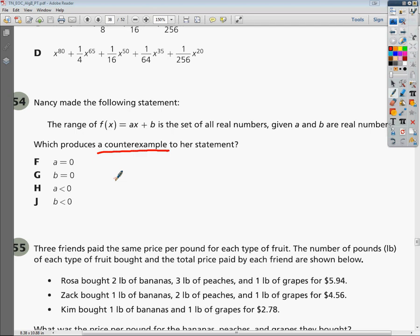When I see f(x) equals ax plus b, in my head I automatically think y equals mx plus b. I took it out of function notation and turned it into slope intercept form. So essentially, my a value would be my slope. The b value would represent the y-intercept.